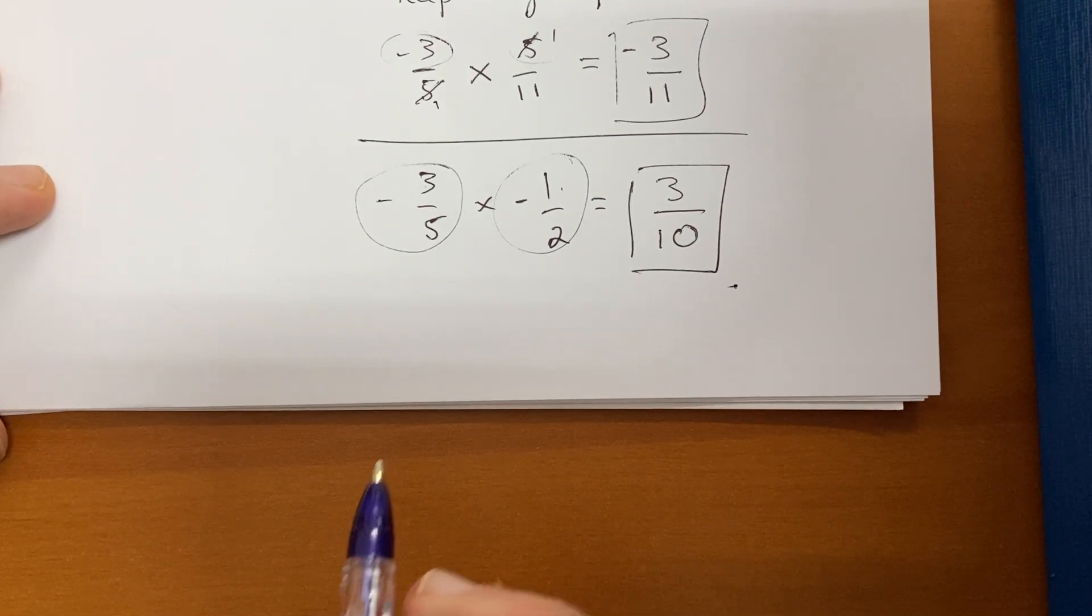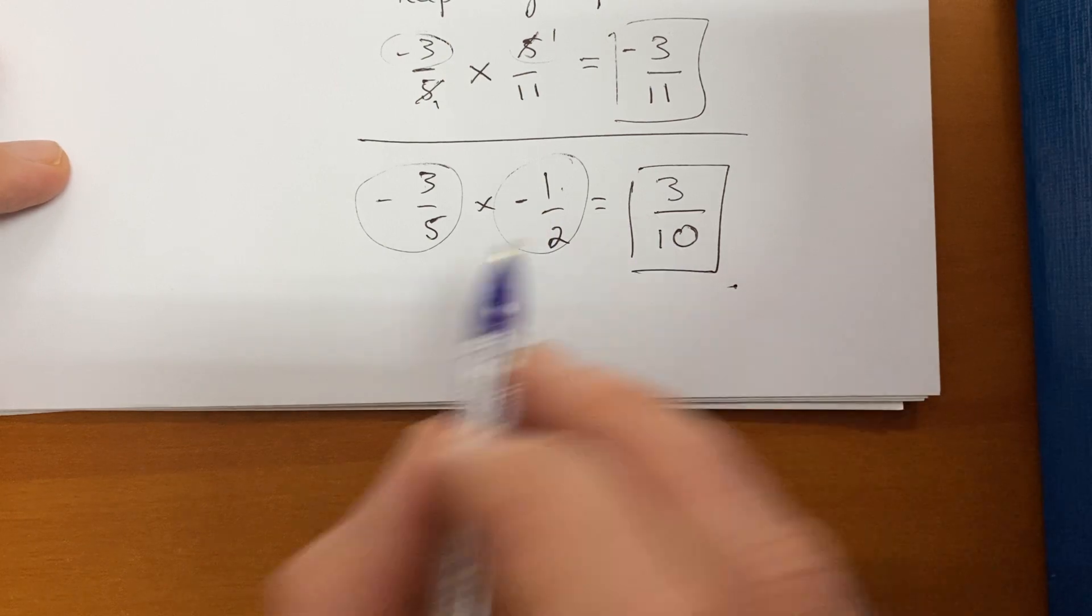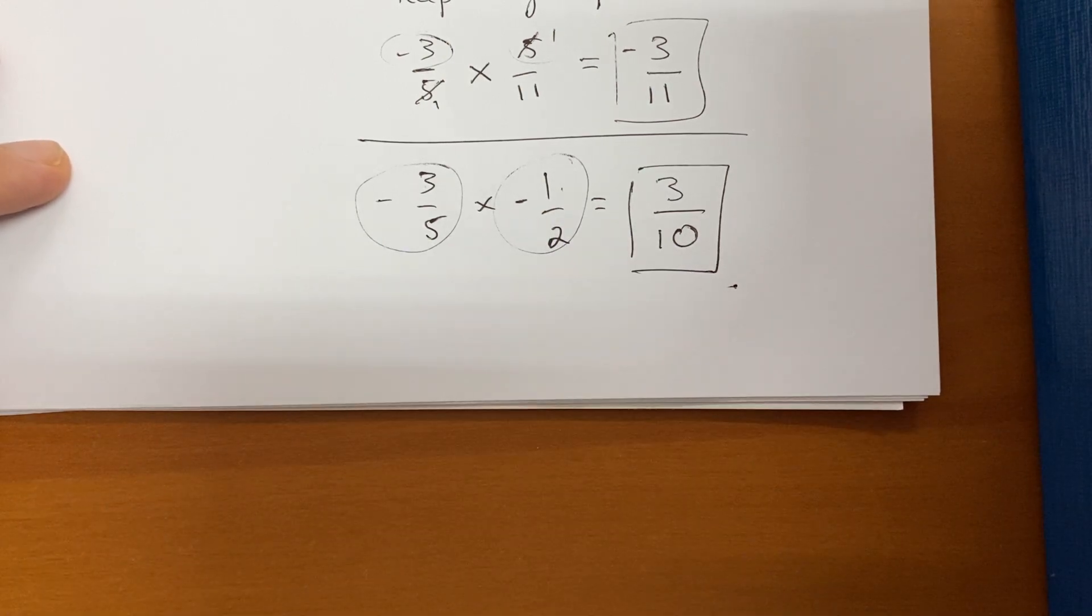If you're multiplying a negative times a negative, you get a positive. If the signs are different, you get a negative. All right, so hopefully that helps you with some of the more difficult fractional operations questions.